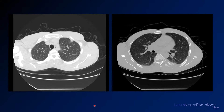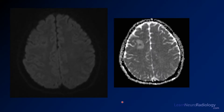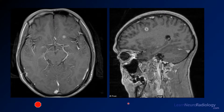Finally, there are some additional images from elsewhere in the body: a few images from a chest CT and some images from an MRI of the brain. Here you have a FLAIR and a post-contrast image through the centrum semiovale, diffusion with DWI on the left and ADC on the right, and a few additional post-contrast images. That's all the images for this case.